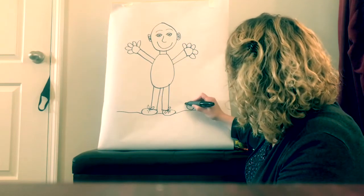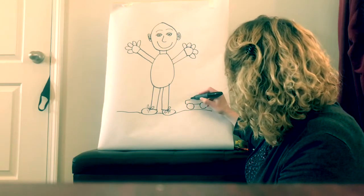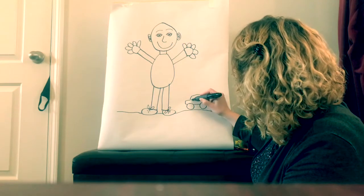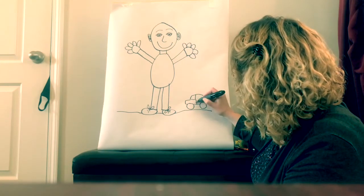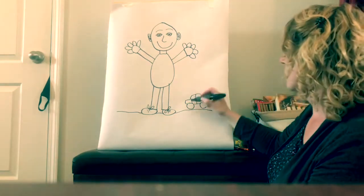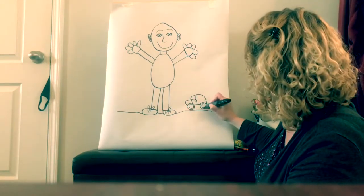And then it needs to have like a rectangle. And then I'm going to give it a window. Some doors. And there we go. We have some tires.